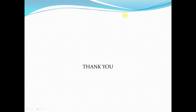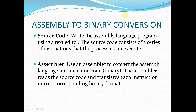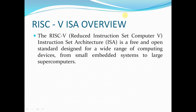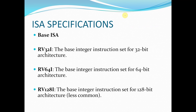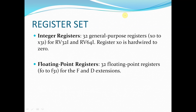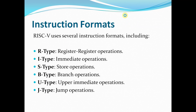Now in this session, we will start with the discussion of assembly to binary conversion — how the assembly code we write gets converted into binary. Afterwards, we will discuss what ISA is, that is instruction set architecture, then RISC-V ISA, its key features, ISA specifications, extensions for the base ISA, register sets, and instruction formats.